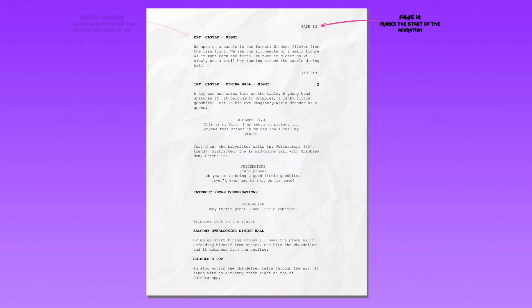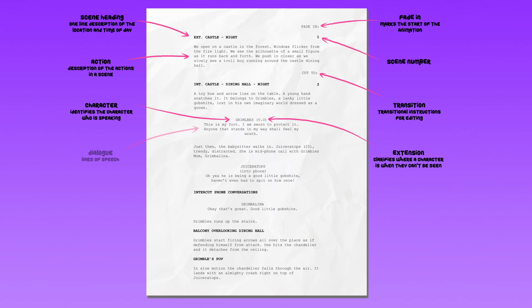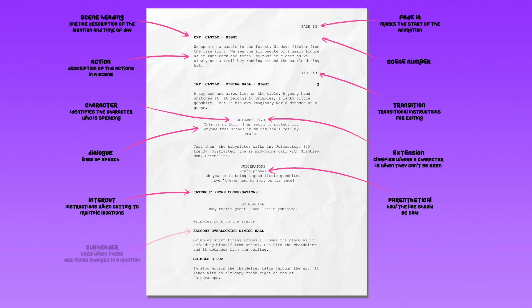But how would you write the script itself? Well let me show you an example of a script format and everything you need to include. Fade in: marks the start of the animation. Scene heading: one line description of the location and time of day. Scene number. Action: the description of the actions in the scene. Transition: used as transitional instructions for editing. Character: identifies the character who is speaking. Extension: clarifies where a character is when they can't be seen. Dialogue: the lines of speech your character says. Parenthetical: provides information on how the actor should say the line. Intercut: instructions when cutting to multiple locations. Subheader: used when there are minor changes in the location. Shot: indicates the camera angle or movement in a scene.